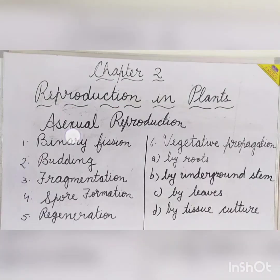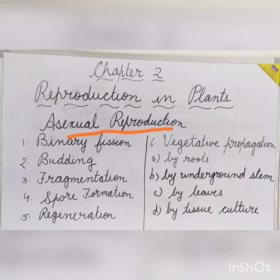Asexual reproduction is the simplest method of reproduction that takes place in organisms whose bodies have a simple structure. It is quite common in plants.